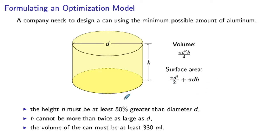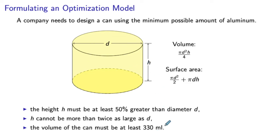There are design constraints based on functional and aesthetic considerations. The height h must be at least 50% greater than the diameter d, but cannot be more than twice as large as d. The volume of the can must be at least 330 milliliters. Since we are minimizing material, we expect the volume to be exactly 330 milliliters in the optimal solution — a higher volume would require more material. So how do we formulate a mathematical model?